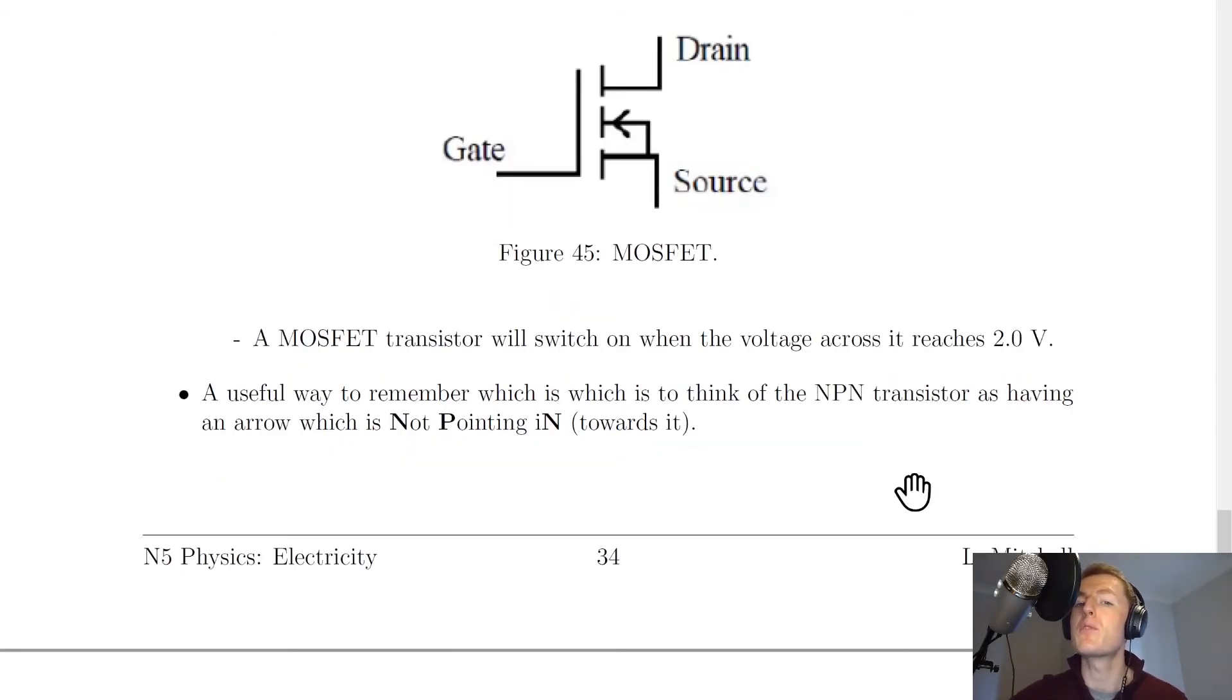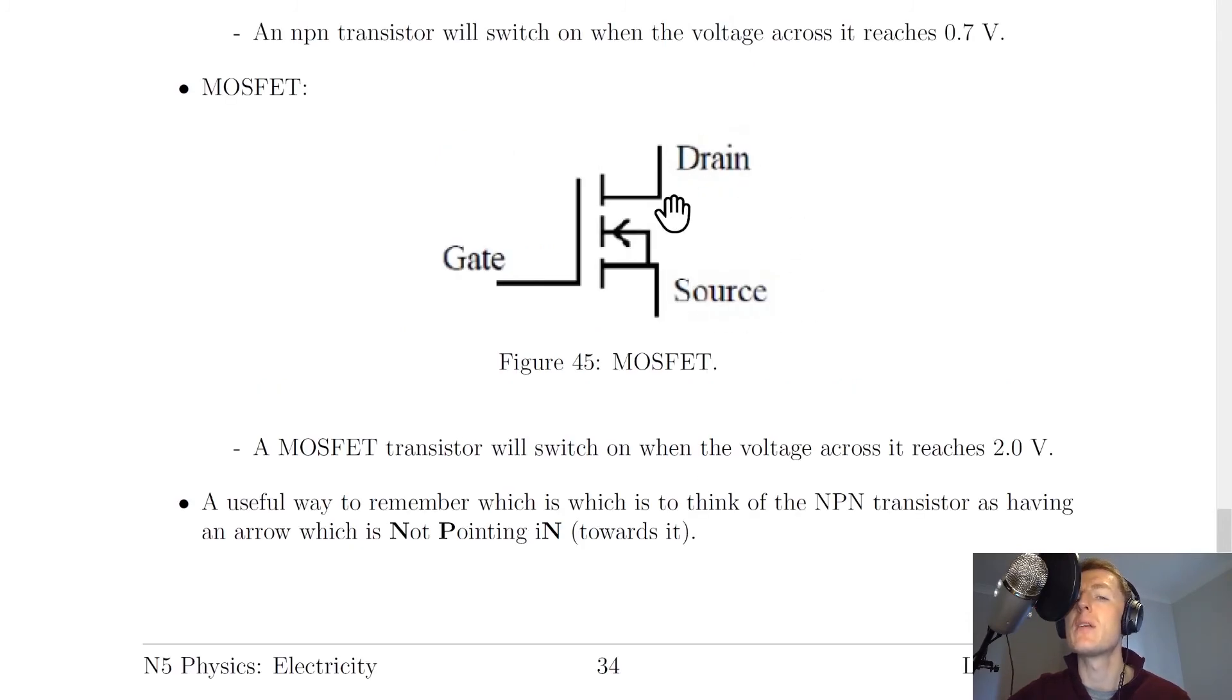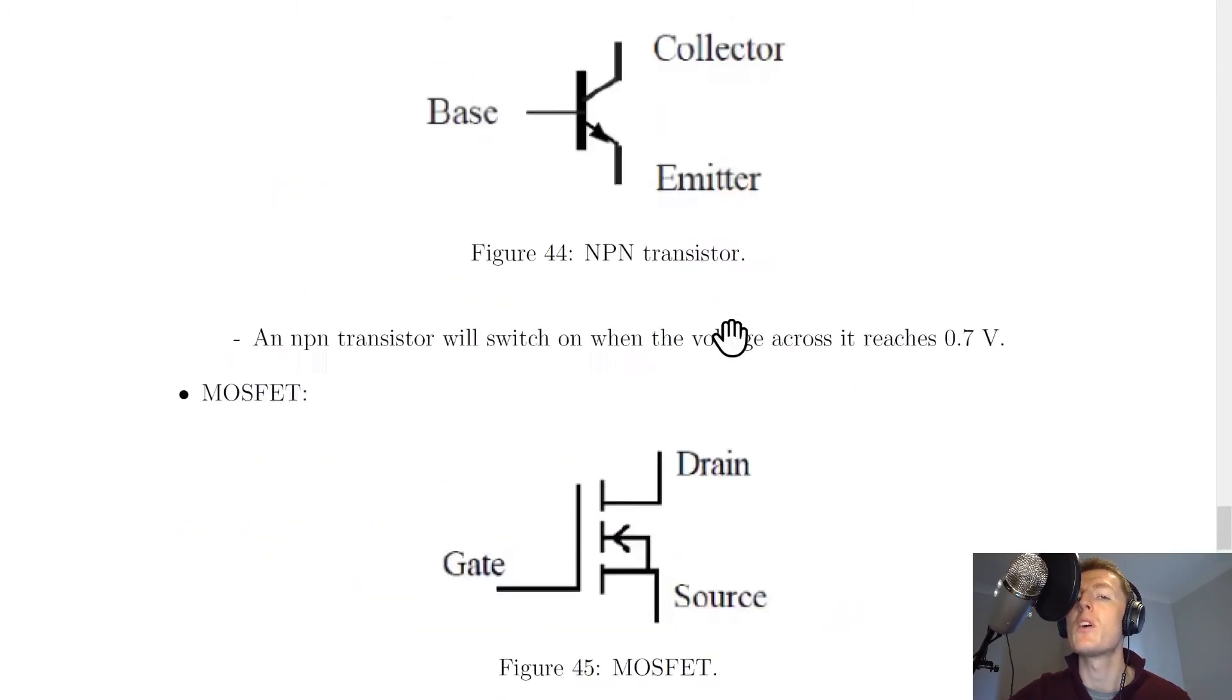If you're presented with circuit symbols for both of these transistors and asked to decide which one is which, a good way to distinguish between them is to think of the NPN transistor as having an arrow which is not pointing in towards it, because notice that the MOSFET does have an arrow pointing towards it.